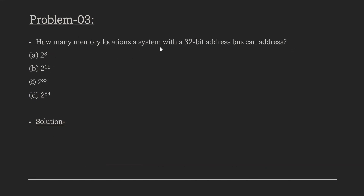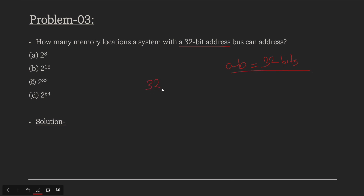Next question: how many memory locations of a system with a 32-bit address bus can be addressed? This is a concept-based problem. How many memory locations can a system with a 32-bit address bus address? The address bus has 32 bits total, so how many unique addresses can it generate?